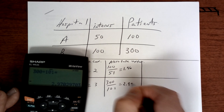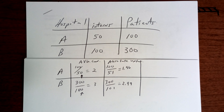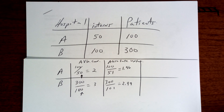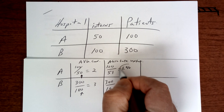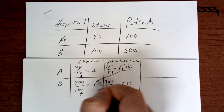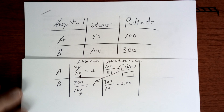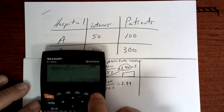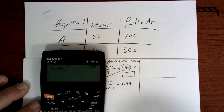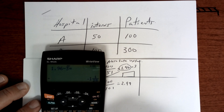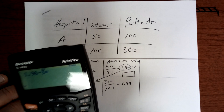Once you get to that point, you have to go ahead and subtract. In this case, you're going to take this one minus that one. So 1.96 — it's going to be a negative, but I'm going to change it to a positive — minus 3. When I do that, I get 1.04.